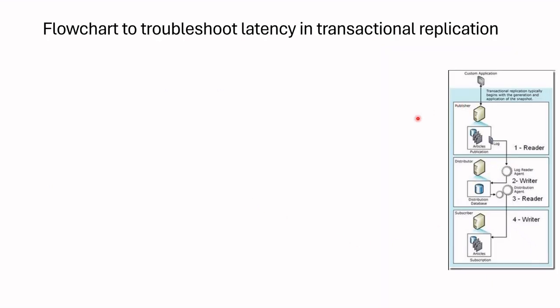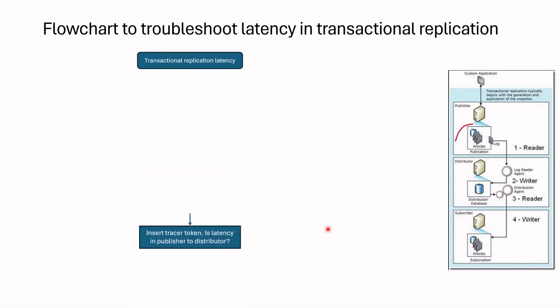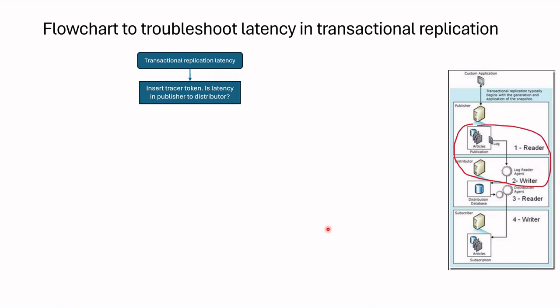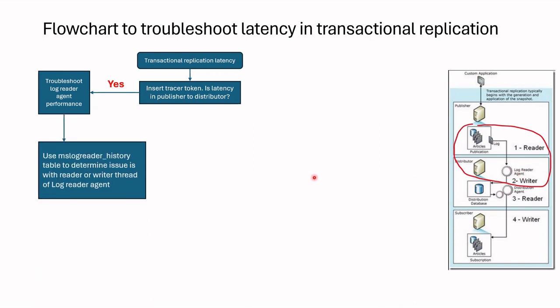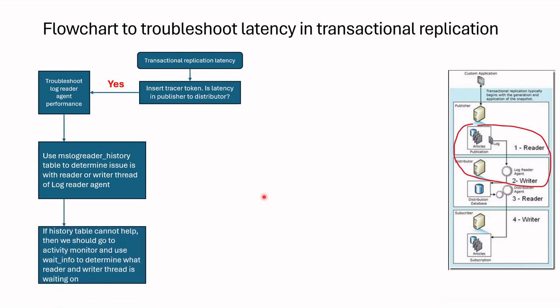I have my own flowchart to troubleshoot latencies in transaction replication. Suppose you detected latency — the next step is to insert a tracer token and investigate where the latency is happening. If the latency is between publisher and distributor, we should investigate the log reader agent performance and its threads. Specifically, we should first look at the MSlogreader_history table to determine issues with the reader or writer thread. If that does not help, we can also check activity monitor to determine what the reader or writer thread is waiting on.